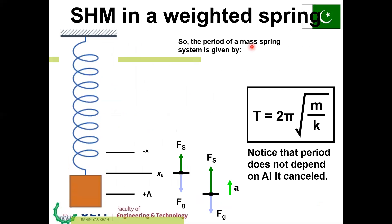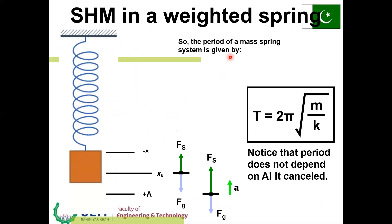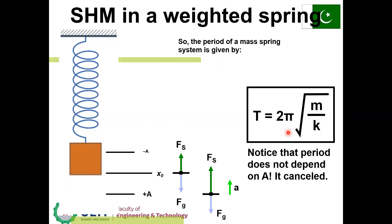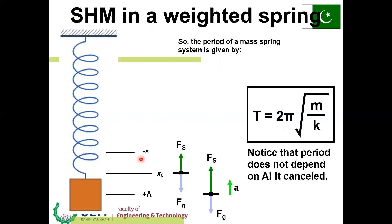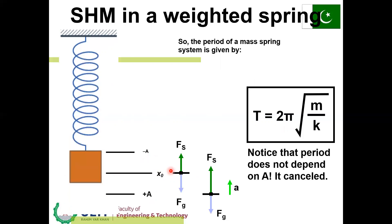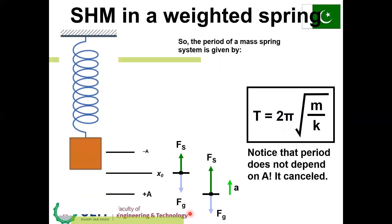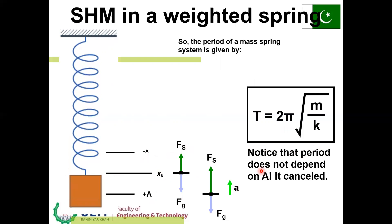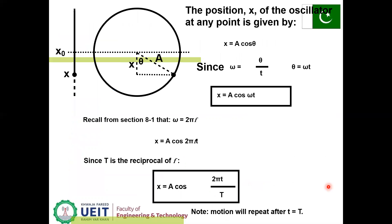Simple harmonic motion in a weighted spring: the period of a mass-spring system is T = 2π√(m/k), where −A and +A are the extreme positions and x = 0 is the mean position. The mass moves up and down; the downward force is Fg and the restoring force is Fs. Notice that the period T does not depend on amplitude A. The position x of the oscillator at any point is given by x = A cos θ.